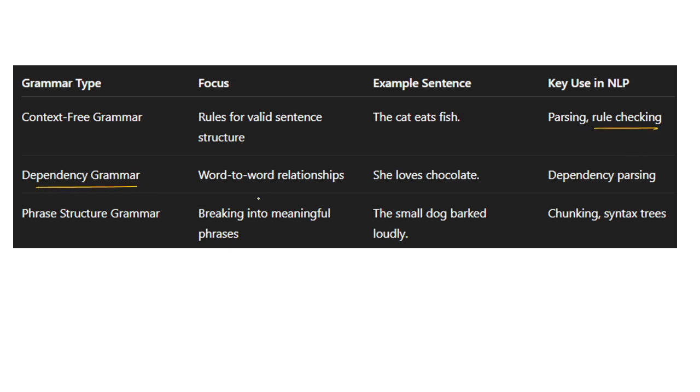If we talk about dependency grammar, it focuses on word-to-word relationships like 'she loves chocolates.' Here she is dependent on this and chocolate is also dependent on this particular term. Dependency parsing it is called. Another is phrase-structured grammar.